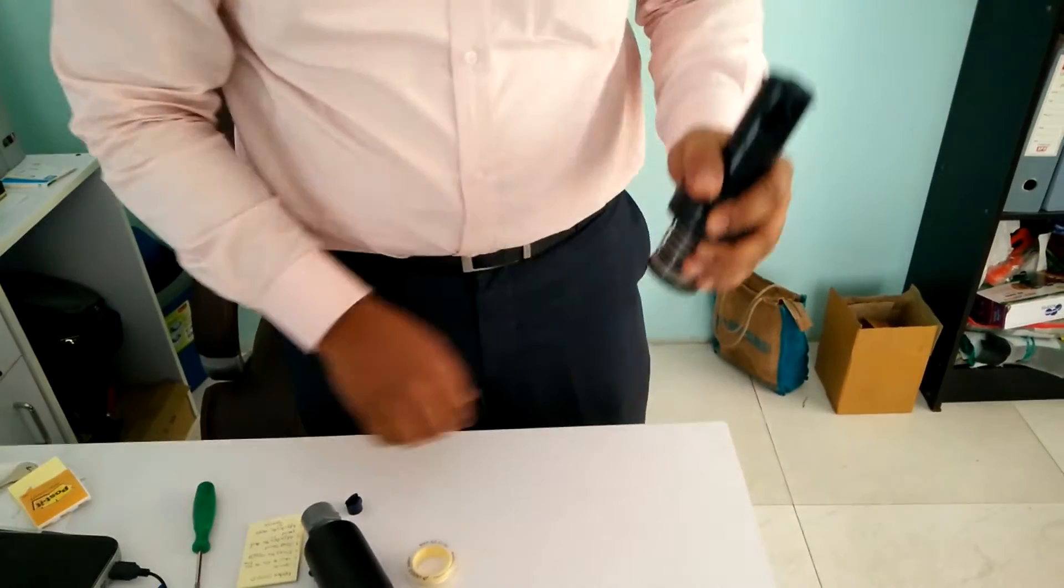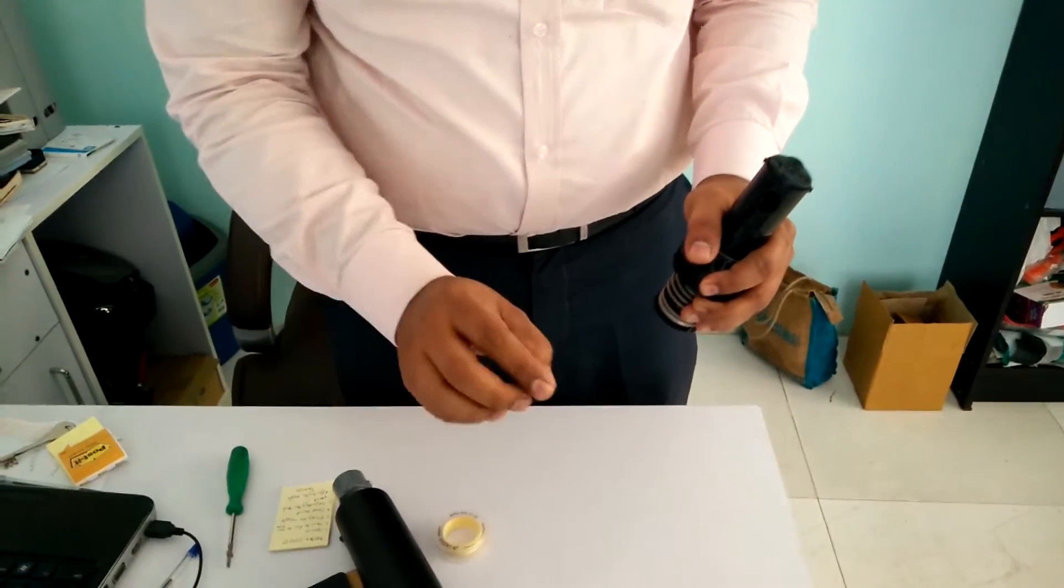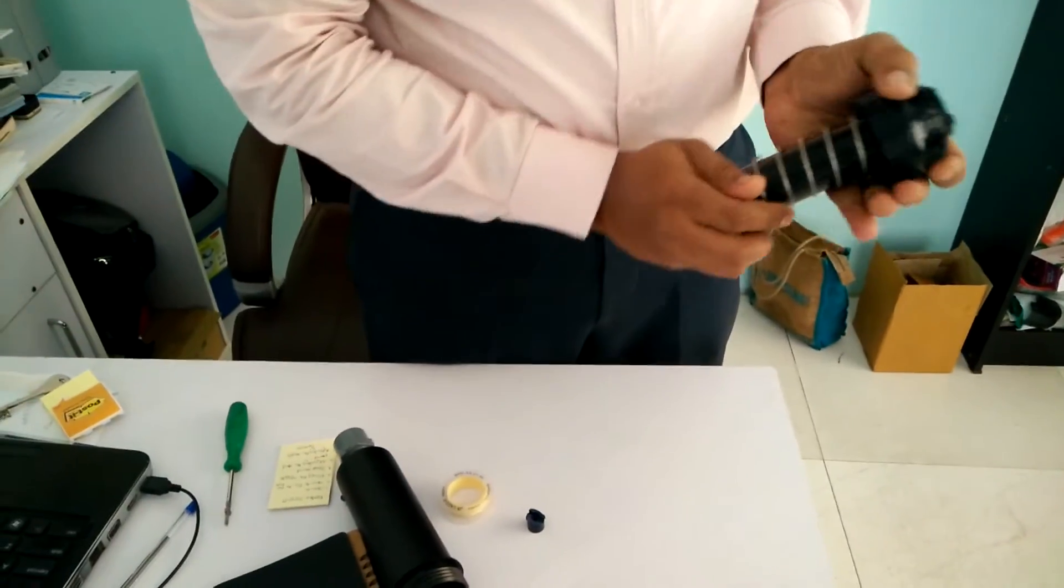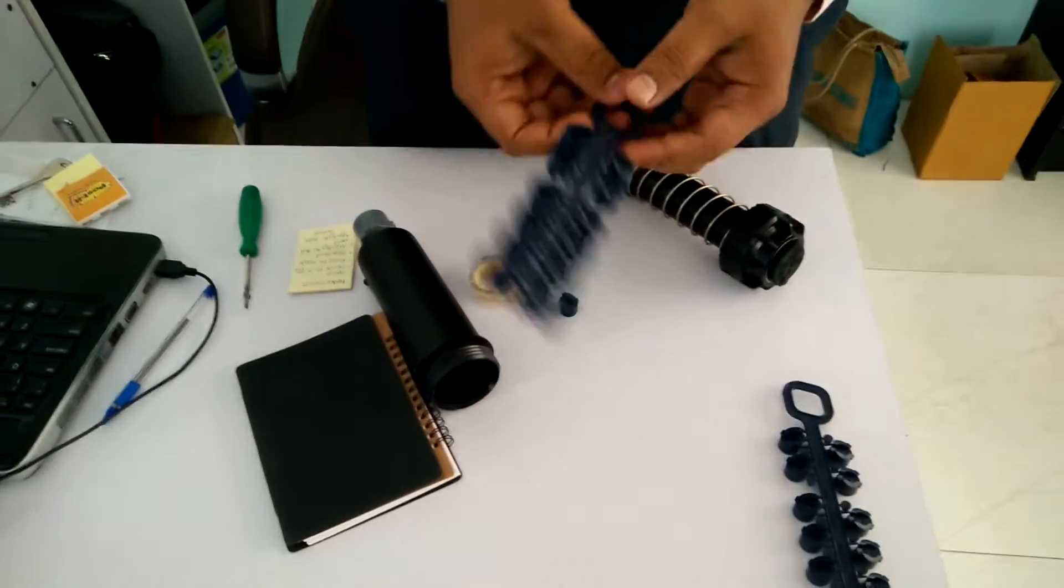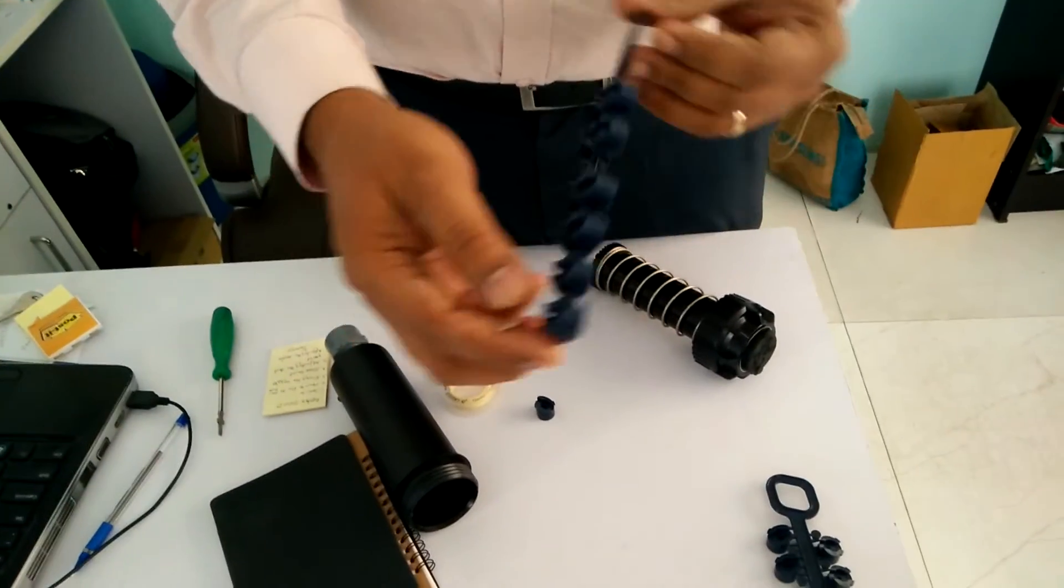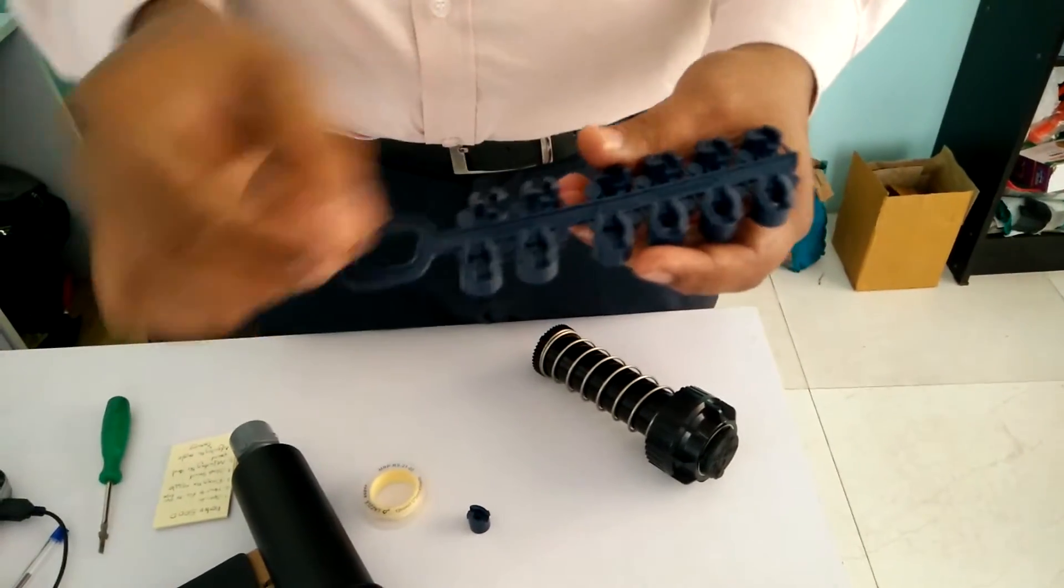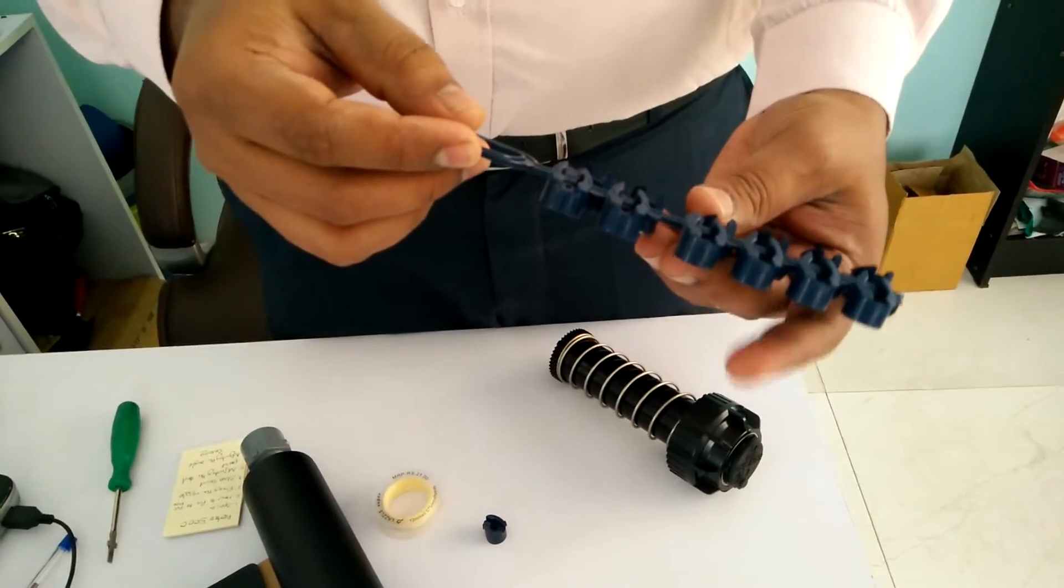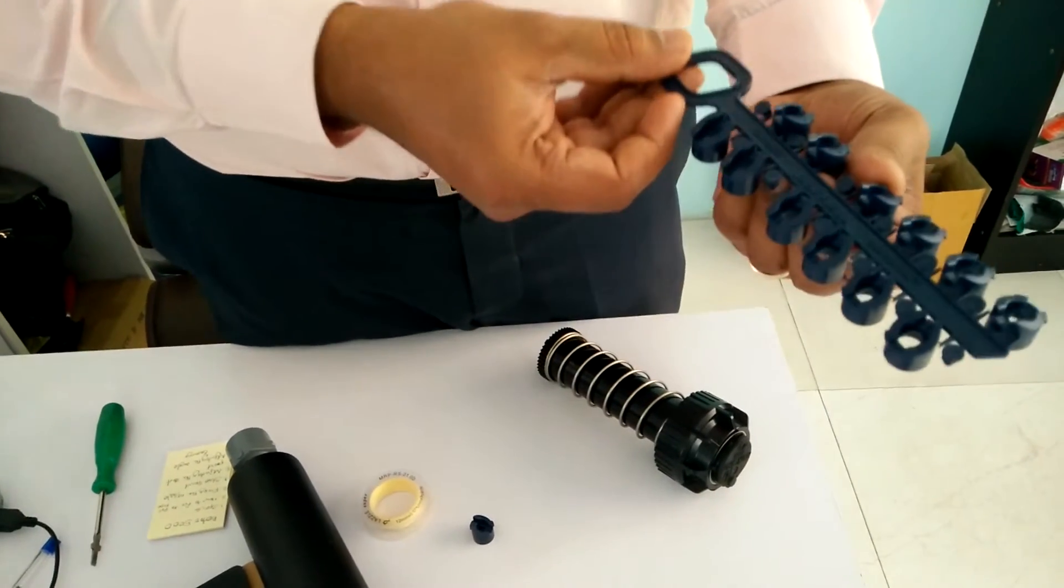Next I will show you how to insert a nozzle. Before that, you have to decide which nozzle to use. This is the nozzle tree usually you will be getting. Sometimes it will be split from this nozzle tree, but it will have the markings here.